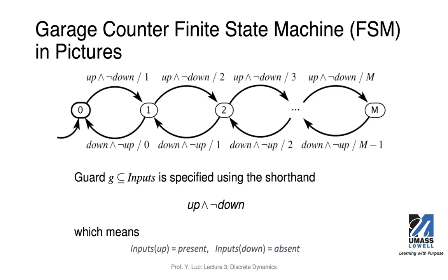What we have here is circles, arrows, and labels on top of the arrows — you've probably seen such state machines before in logic design. We're going to go over this because it's particularly useful in our cyber-physical system design, and also in lab one we're going to be using state machines like this. We have states represented by circles, labeled from zero, one, two, up to M. The arrows from one state to another represent possible transitions if certain conditions hold.